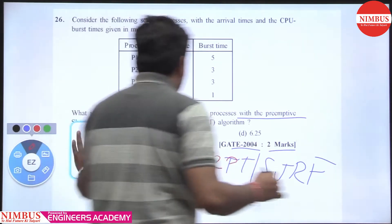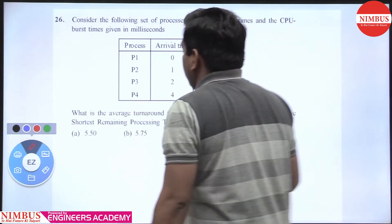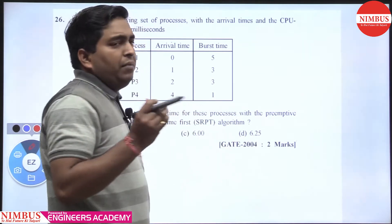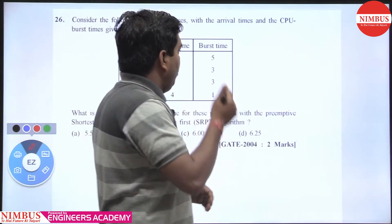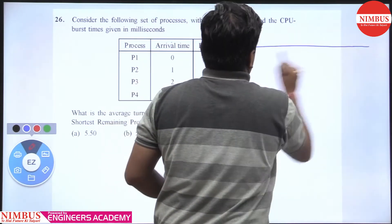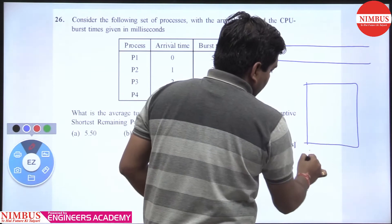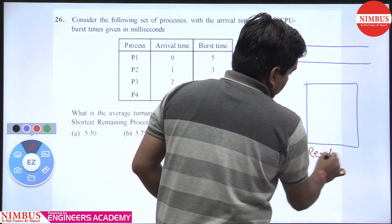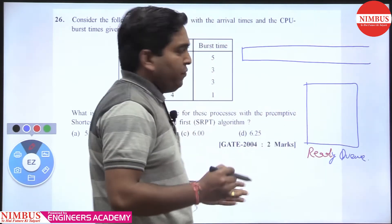We just apply SRTF and calculate the average turnaround time. What is the concept of SRTF? It is similar to SJF with preemption. How do we do this? It's my technique: we make one ready queue and one box.